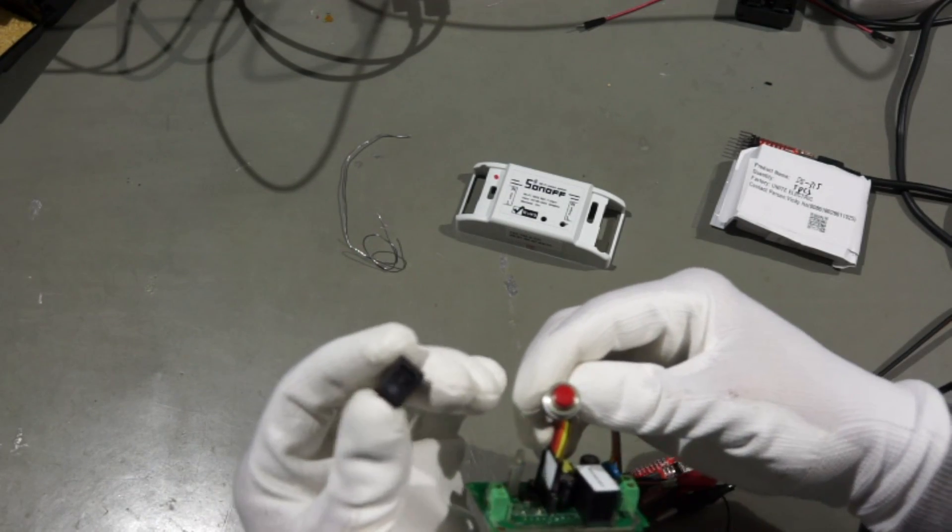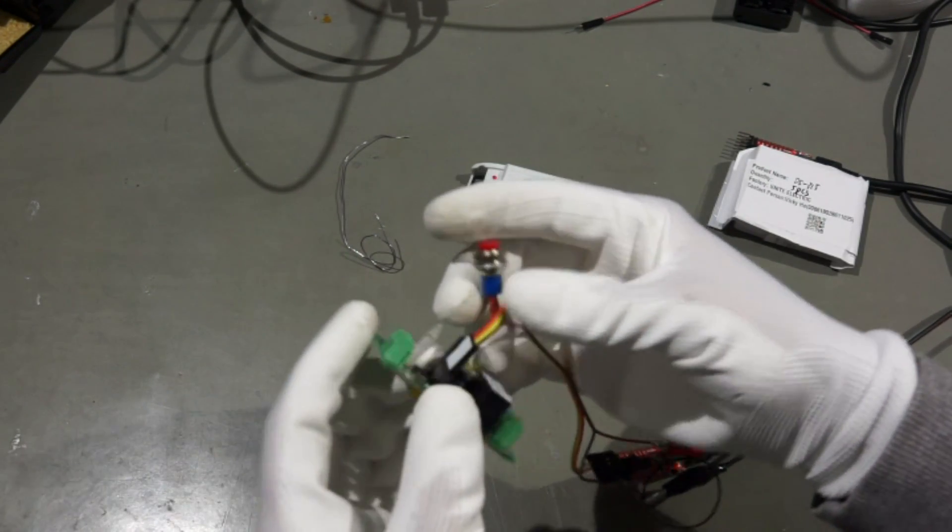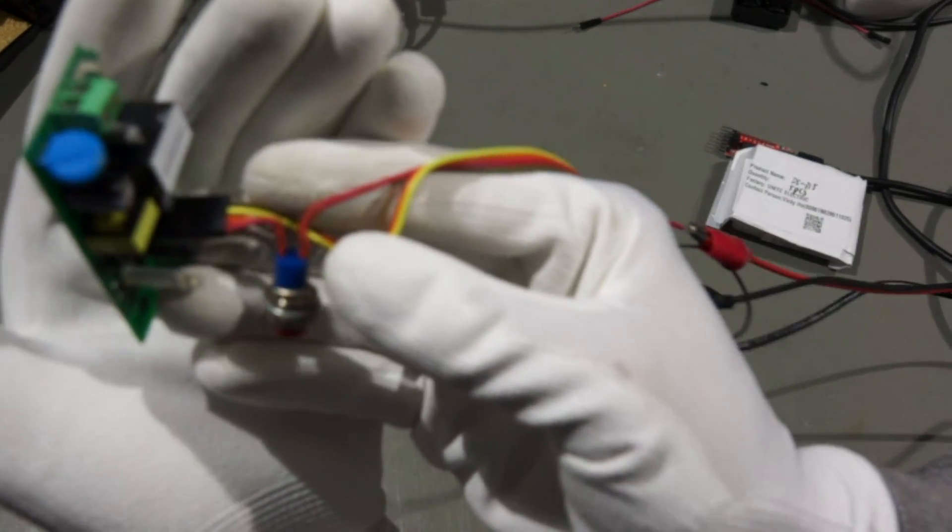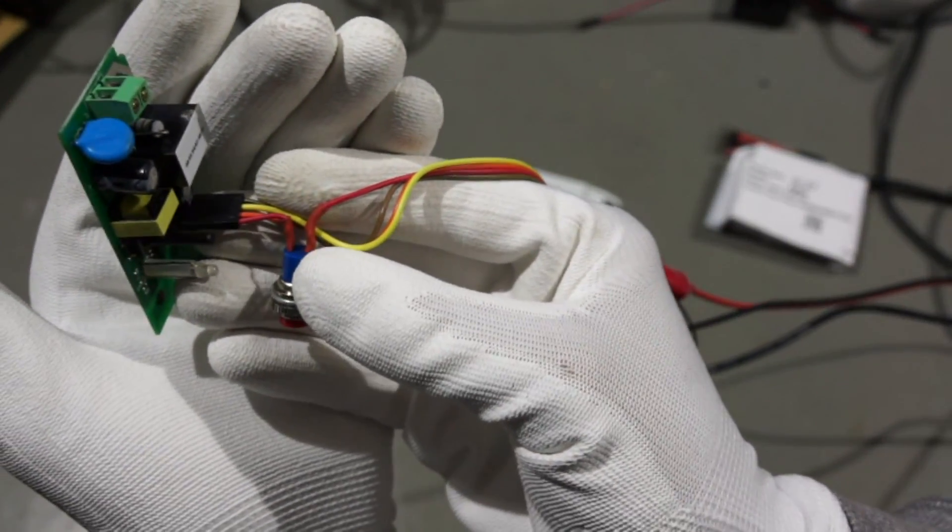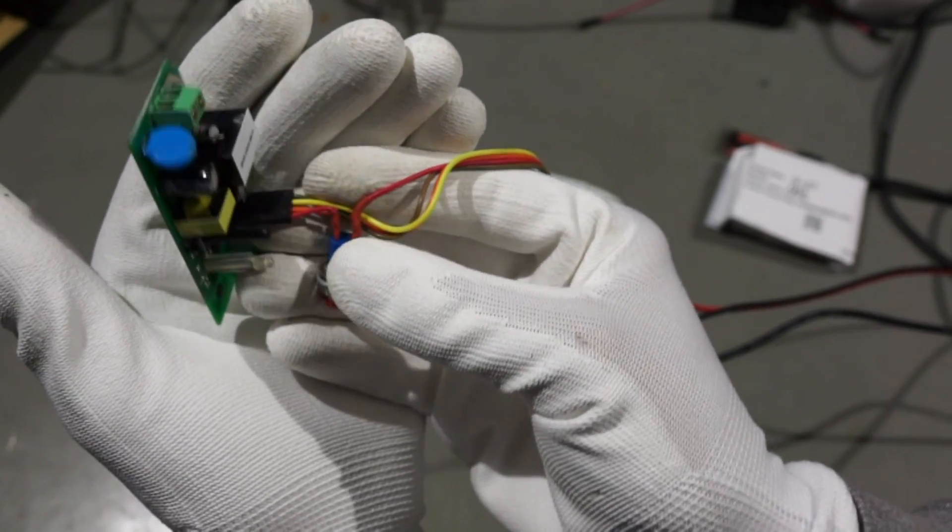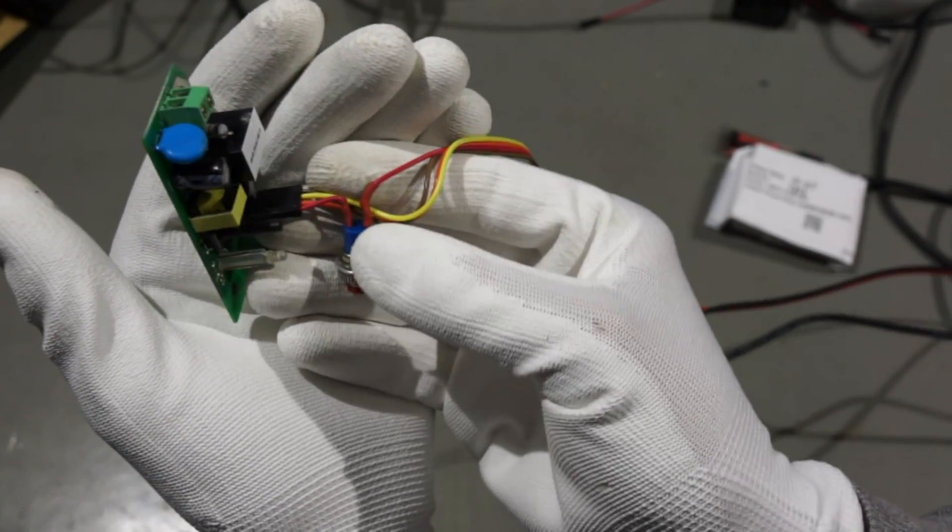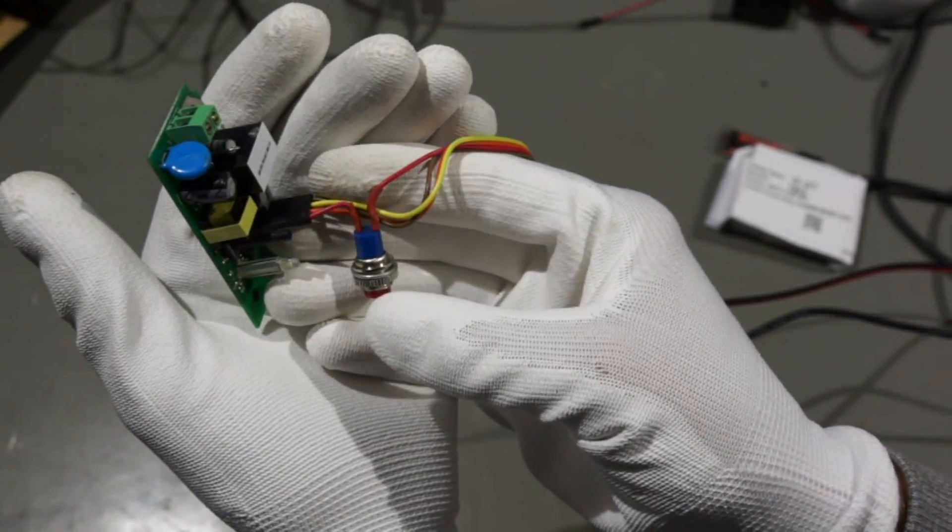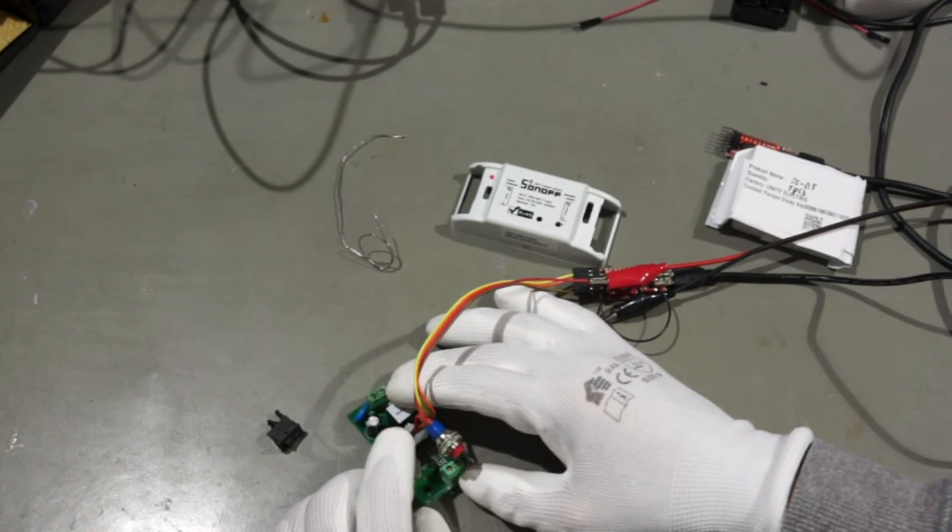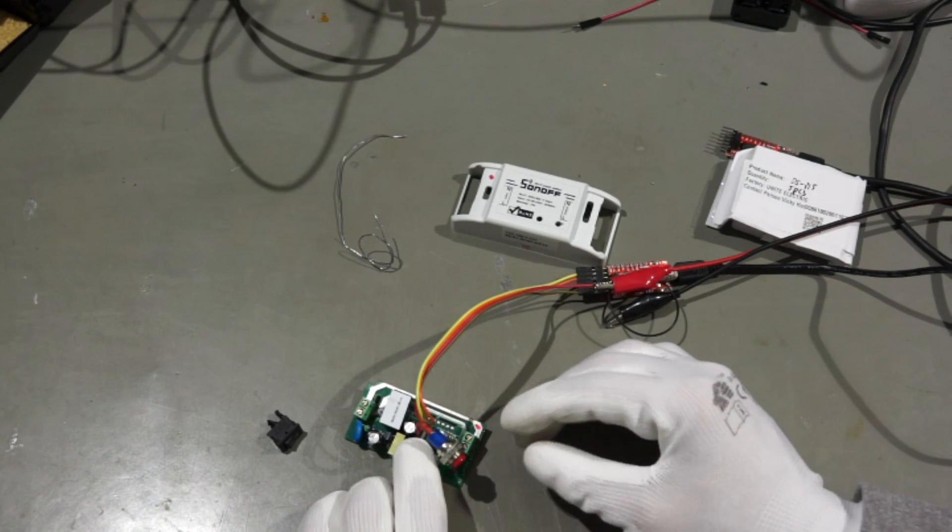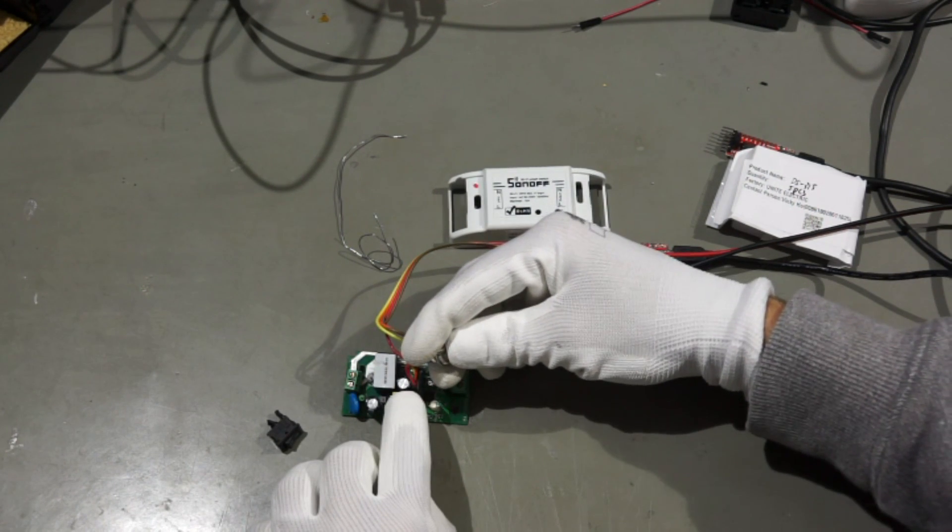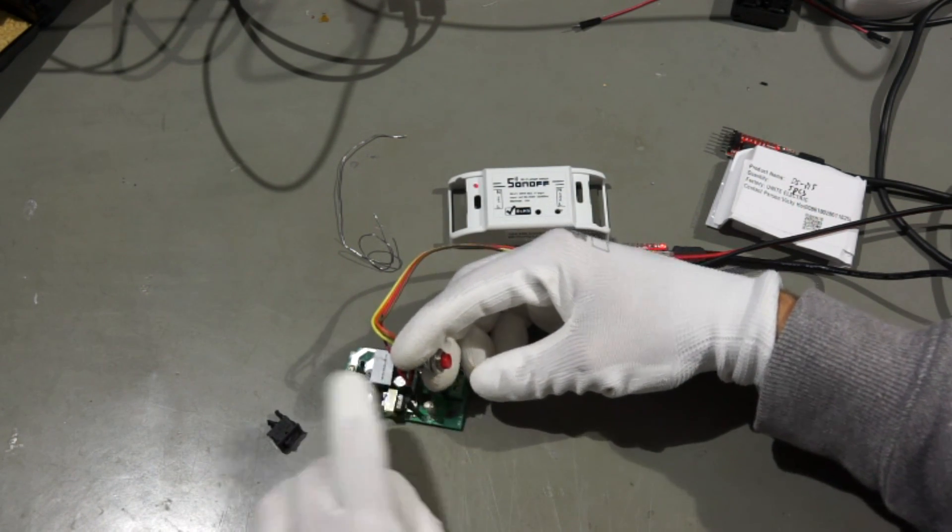So you see now I replaced this switch with this button here and if you look close here you see that I was even able to use the shrink tubes here because this is in the plus line. Okay now let's try to flash this sonoff device. Now I just press this button GPIO 0 and now I just press this and release it and then I release this one and now I can program it.